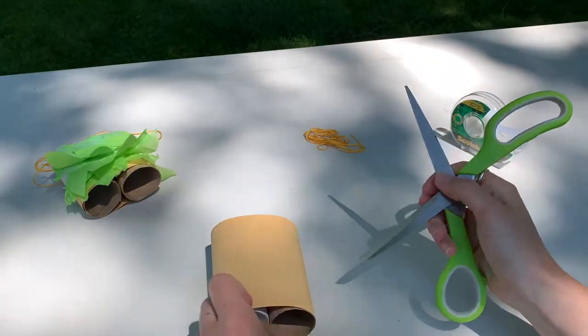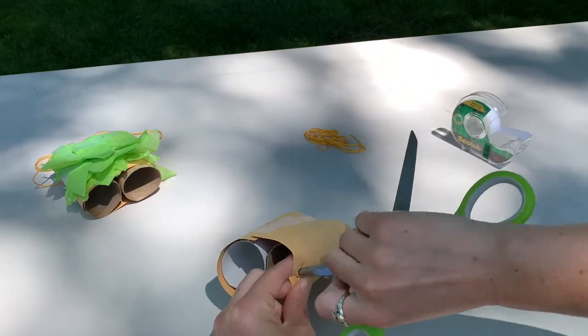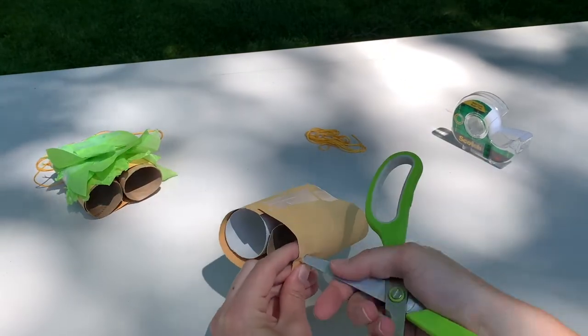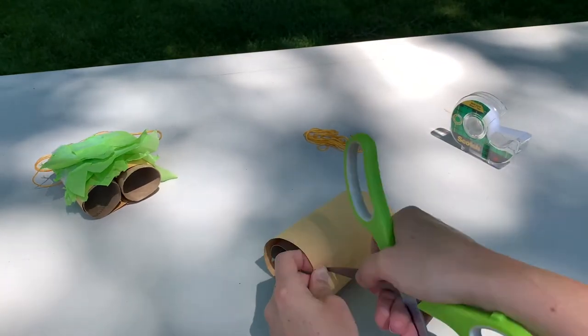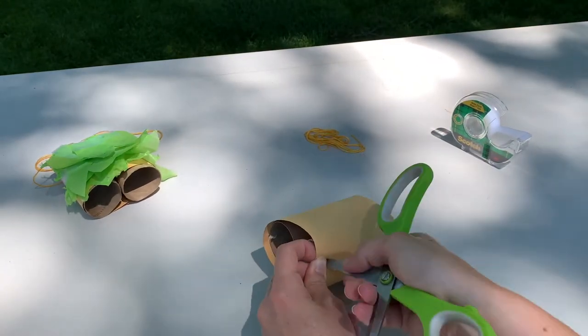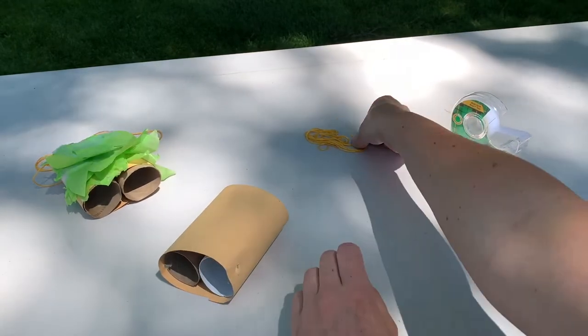What I'm going to do now, if you have a hole punch, it'll make it a whole lot easier. I don't have a hole punch, I have scissors. So you can get a parent to help you with this part, but you're going to take the edge of the scissor and just very lightly work it into the paper until it goes through.